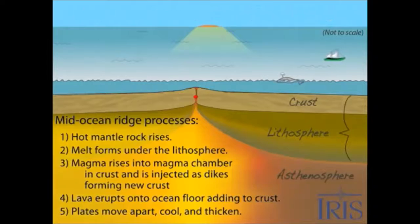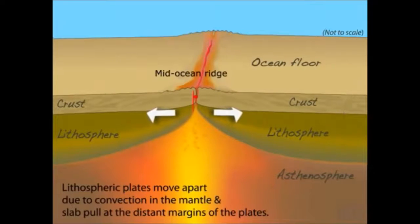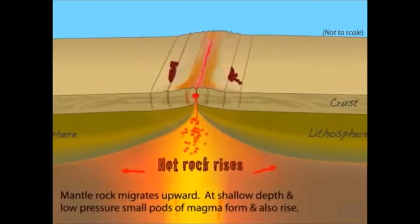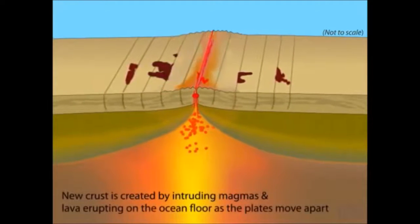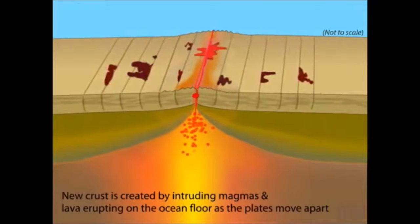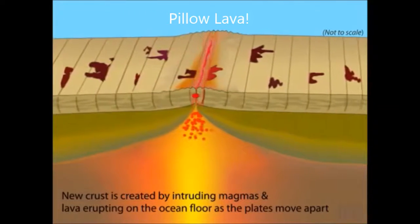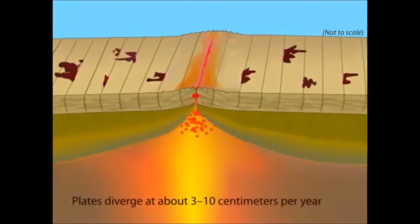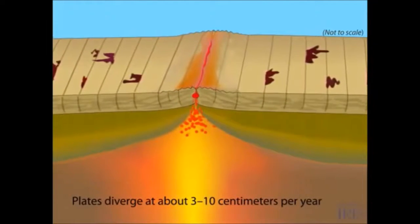At divergent margins, lithospheric plates move in opposite directions. The plates, which include crust and part of the upper mantle, ride over the asthenosphere. As hot mantle rock rises to shallow depths it begins to melt due to lower pressure, forming magma. Dense plutonic rock is created as magma is injected into the crust. Small magma chambers form low in the crust; less than one quarter of the magma ever reaches the surface to erupt as lava. As it moves away from the ridge, the cooling rock sits progressively lower. Like two giant conveyor belts, the plates transport newly formed oceanic crust away from the ridge crest at three to ten centimeters per year.